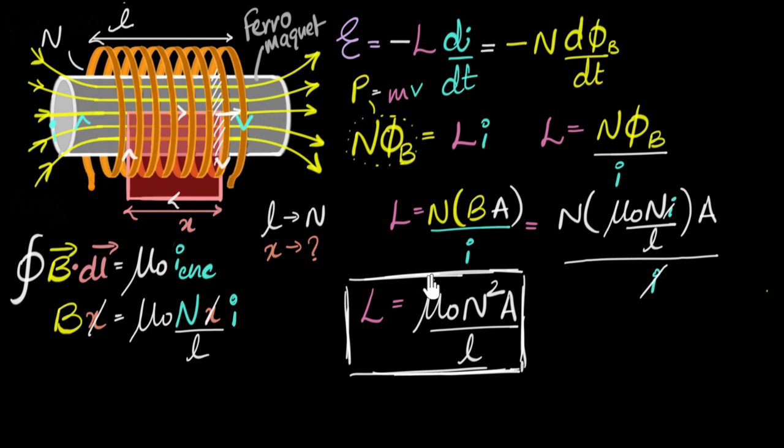then the permeability of a ferromagnet is much, much higher than that of the air. So then the value will not be μ₀. It'll be μ₀ multiplied by some number, and that number is gonna be in thousands or tens of thousands, if you use something like iron or soft iron. And so material also matters, and so to increase permeability tremendously, we wrap it around some kind of a ferromagnet.